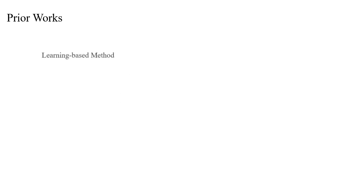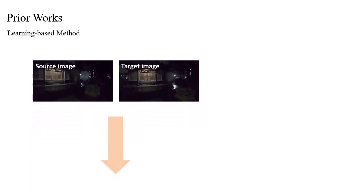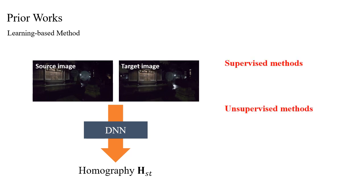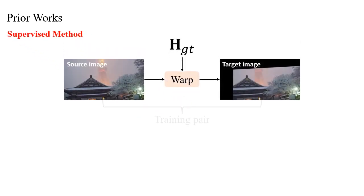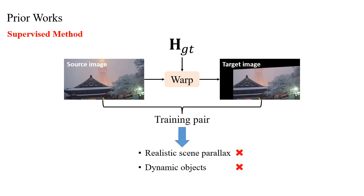The deep learning-based approach learns the homography directly through convolutional neural networks. They can be divided into supervised and unsupervised methods. The former approaches are mainly trained on synthetic datasets that lack realistic scene parallax and dynamic objects, resulting in poor generalization to real-world scenes.